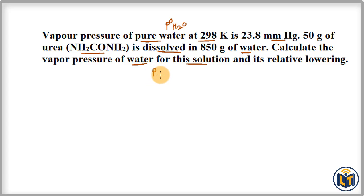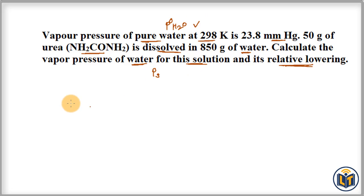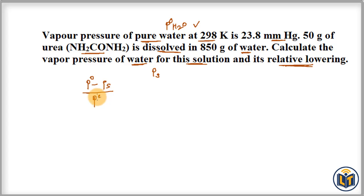We are going to calculate the vapor pressure of the solution containing water as solvent — the ps value — and its relative lowering value. Raoult's Law states that the relative lowering of vapor pressure of solution to solvent is equal to the mole fraction of solute. The formula gives us: p-naught minus ps, divided by p-naught of the pure solvent, equals the mole fraction.